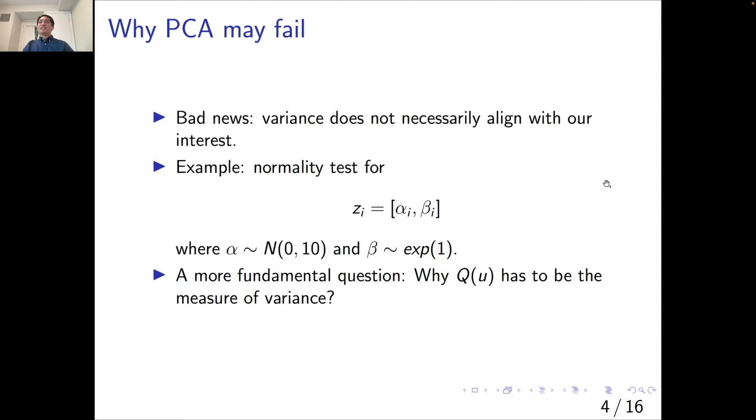However, I have bad news for PCA. The variance does not necessarily align with our interest. Here is a toy example. We construct 2D data with the first component following a normal distribution with standard deviation of 10, and the second component follows an exponential distribution with parameter equals 1. Can we learn the normality of the original data from the first principal component? The result would be totally misleading.